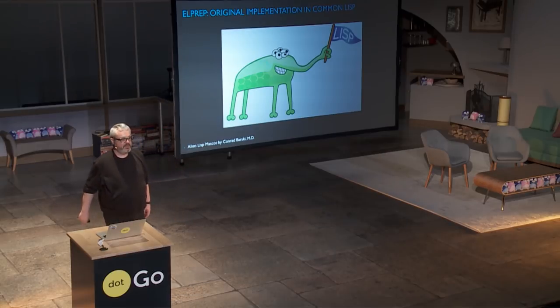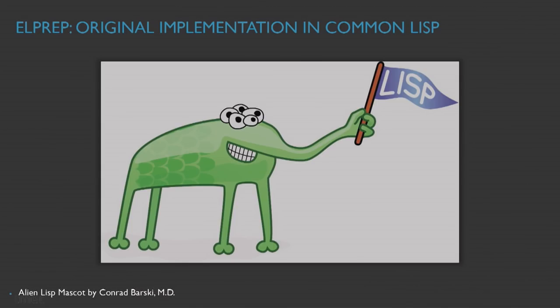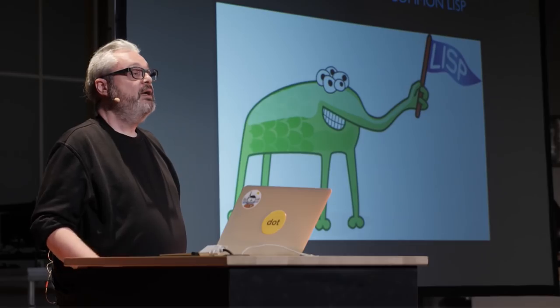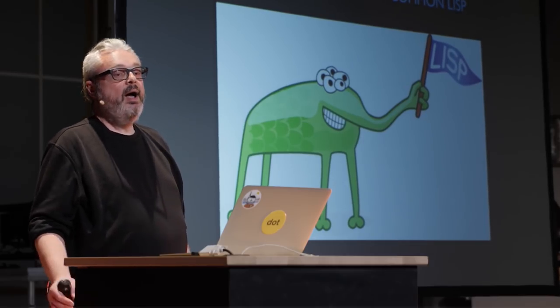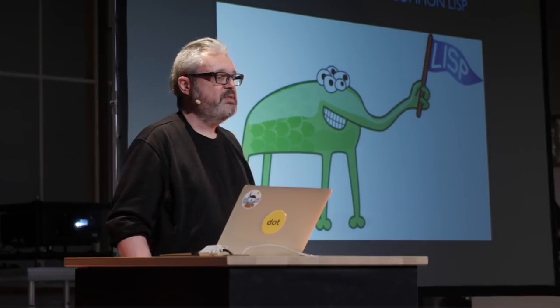The original implementation of this was in Common Lisp. Common Lisp has a couple of great advantages — it's good for prototyping, and it's good for moving prototypes to production. However, there were also a couple of problems, especially with memory management. Since these files are quite large — tens to hundreds of gigabytes in uncompressed form — this puts a lot of stress on the garbage collector when you put all of this in RAM. The garbage collectors in Common Lisp tend to be stop-the-world garbage collectors, which stop all the threads, which is bad for parallelism.